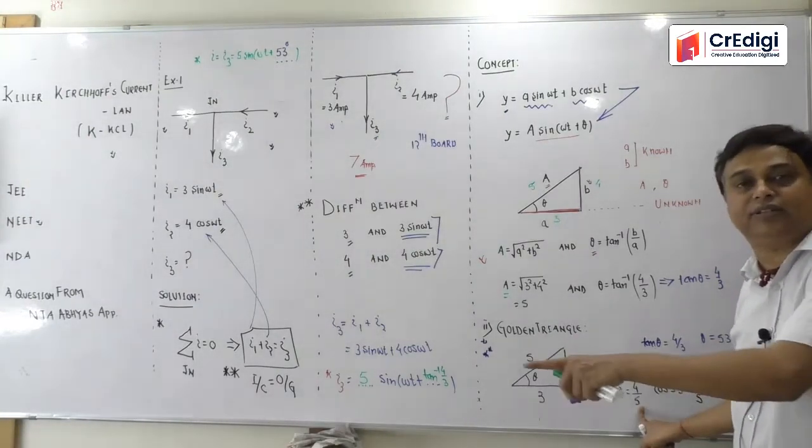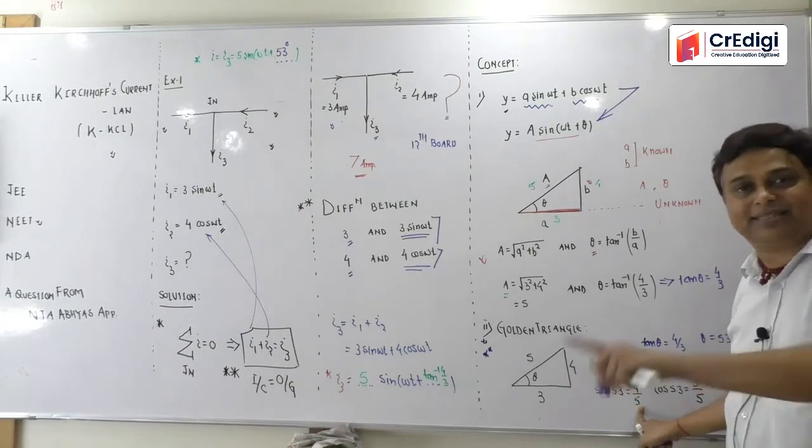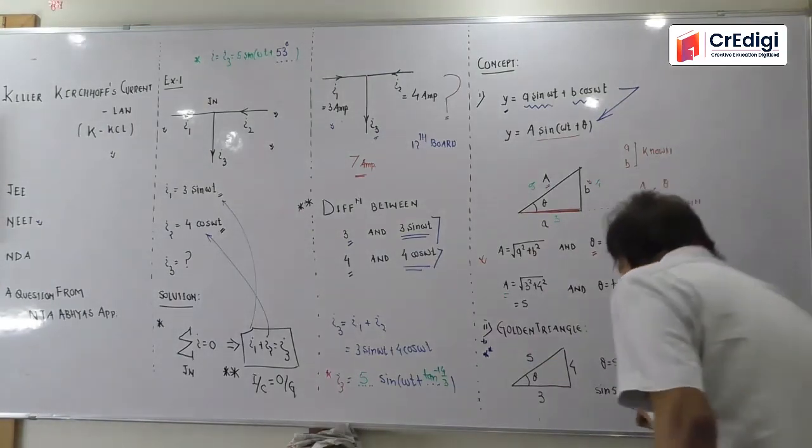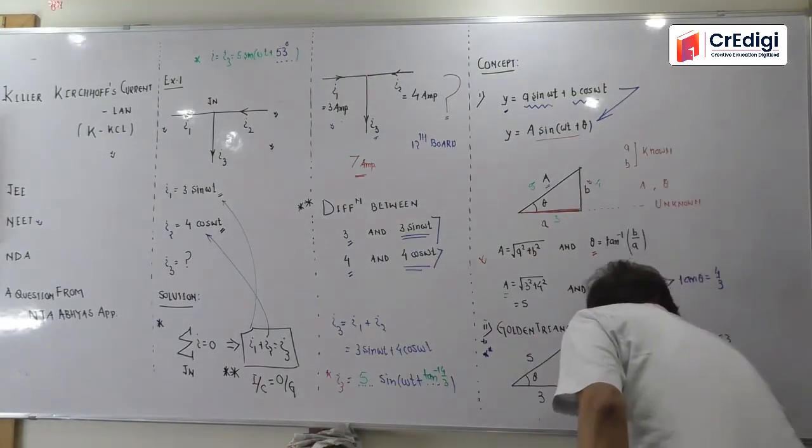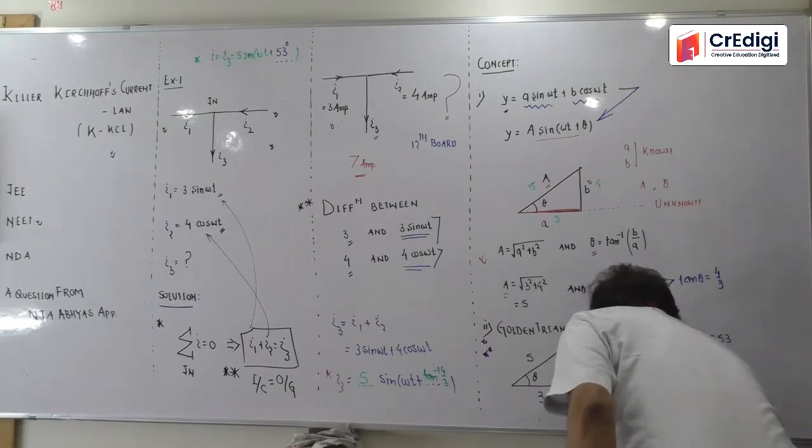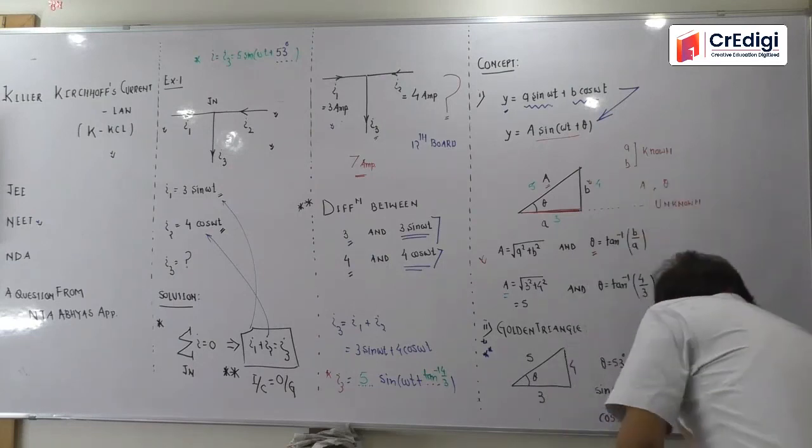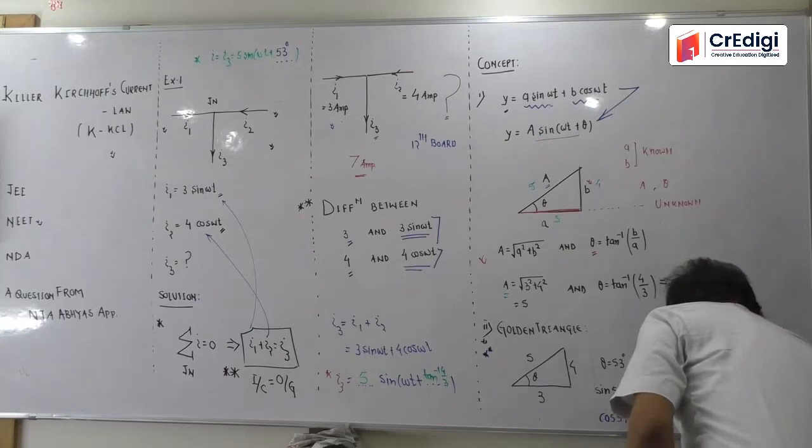If I say that the cos of 37 is the value, the cos of 37 is the cost of 4 by 5. If I say that the cos of 53 is the value, how much is it? How much is it? It is going out to be simply nothing. Sorry, sine 37.